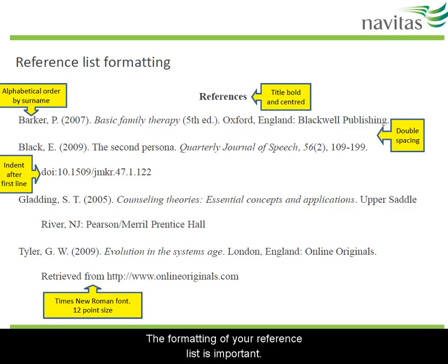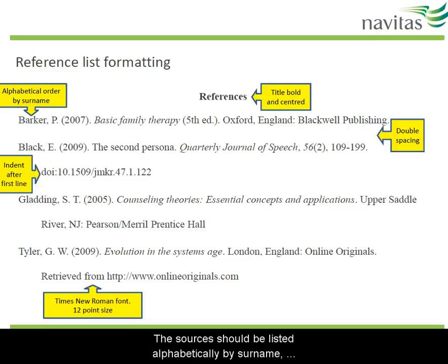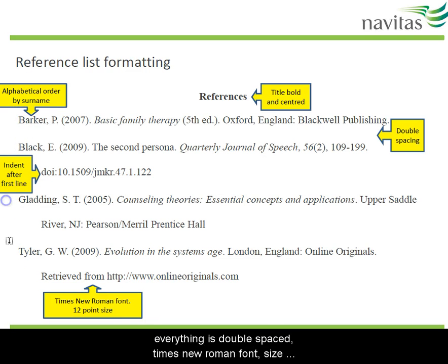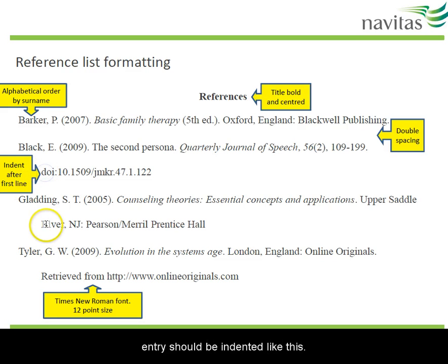The formatting of your reference list is important. You need a title, which is 'References'. The sources should be listed alphabetically by surname. Everything is double spaced. Times New Roman font, size 12. And the second and subsequent lines of the same entry should be indented like this.